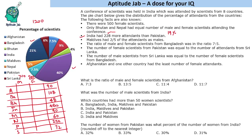Bhutan and Nepal had equal numbers of male and female scientists, so Bhutan gets 24 male and 24 female, and Nepal gets 30 male and 30 female. Maldives had two-fifths of attendants as males: two-fifths of 90 is 36, so 36 male and 54 female. Bangladesh had a male-to-female ratio of 7:5 — 12 parts equals 108, so one part is 9, giving 63 male and 45 female.